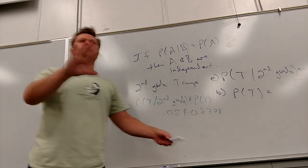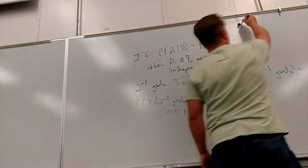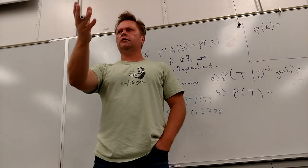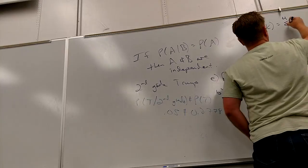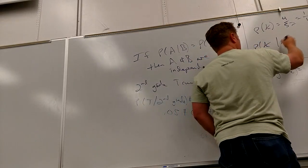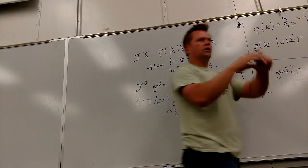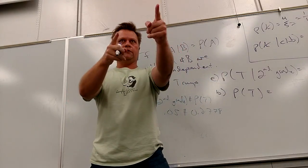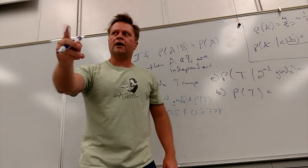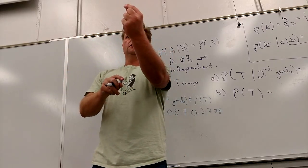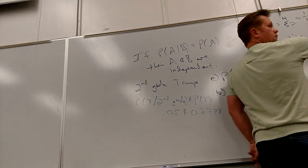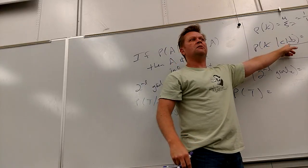A quick example of something that's independent: the probability of getting a king out of a deck of cards is 4 out of 52, which reduces to 1 out of 13. What's the probability I get a king given that it's a club? There are 13 clubs, so the bottom is 13, and out of those clubs there's only 1 king. So P(king | club) = 1/13, which equals P(king) = 1/13 — these are the same. Therefore king and club are independent events.